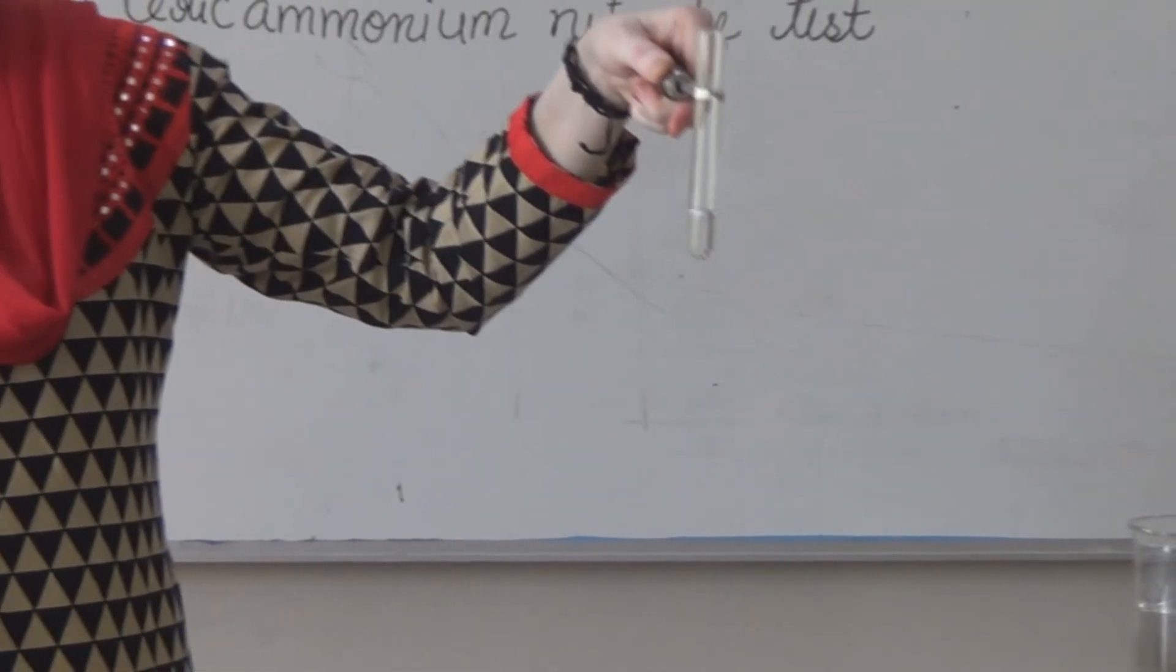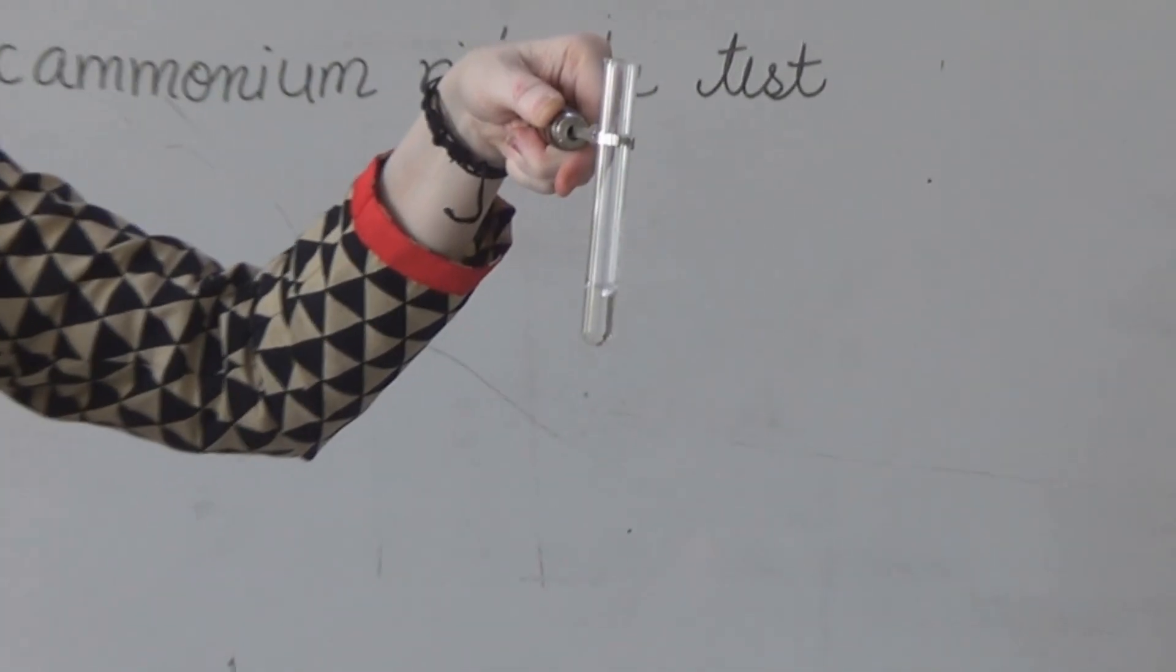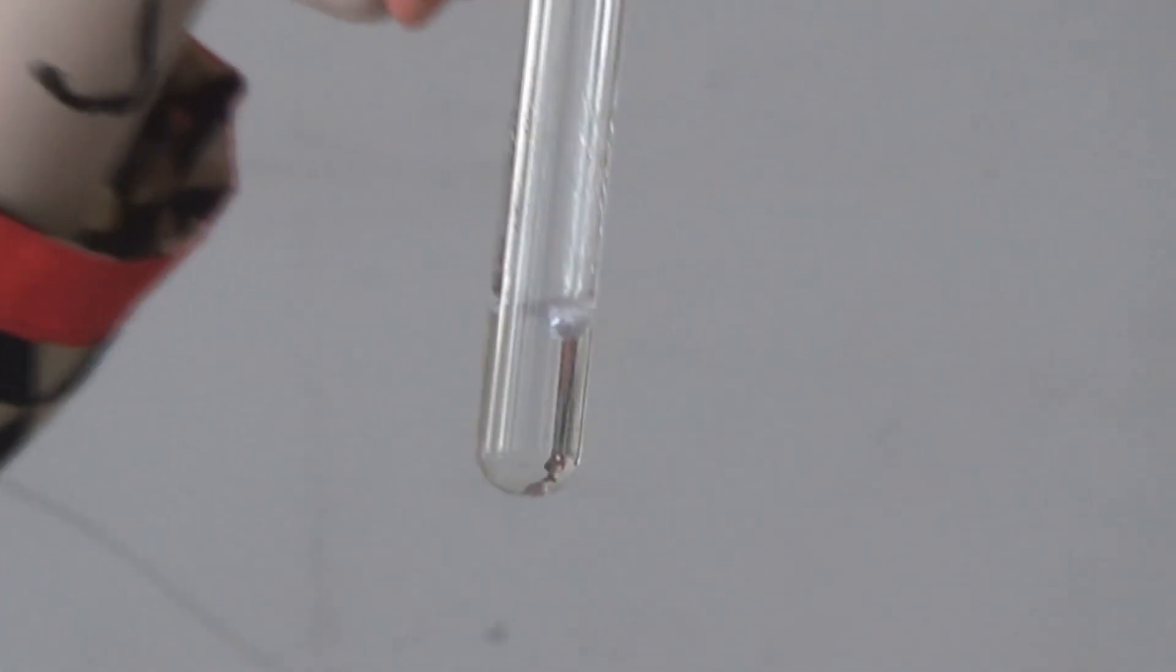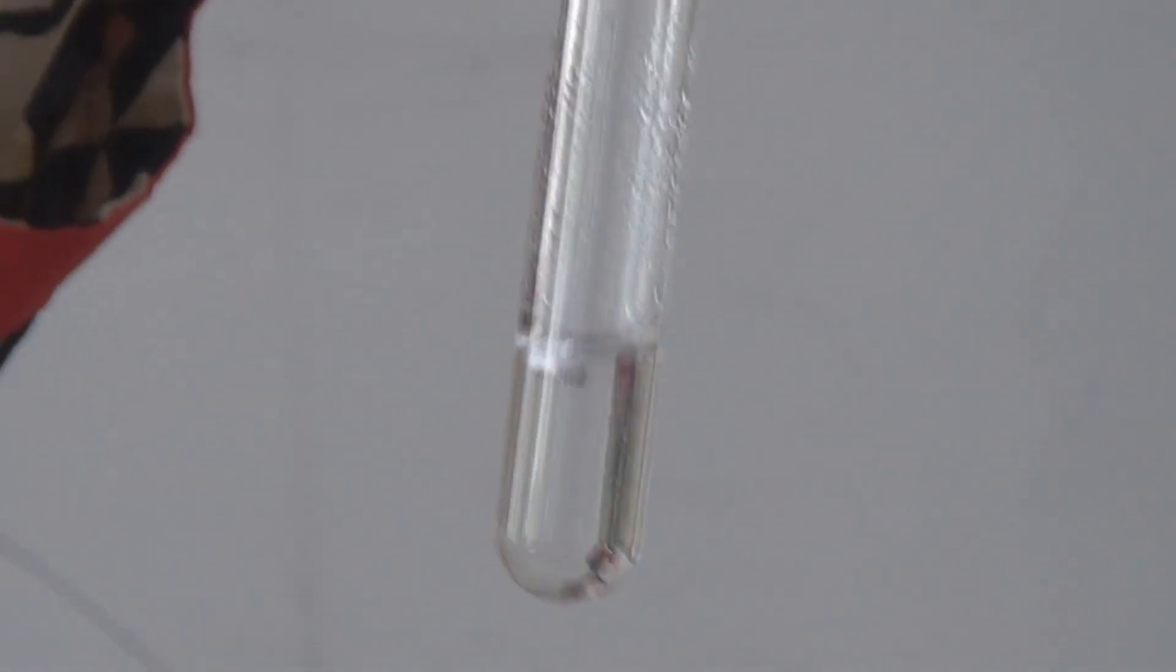Now you can see the brisk effervescence of hydrogen gas. This shows the presence of alcohol in the given organic compound.